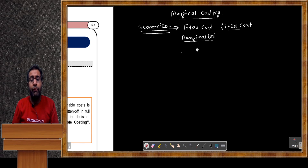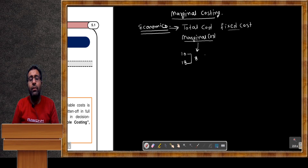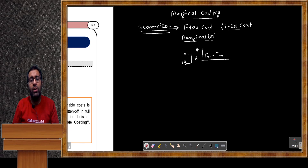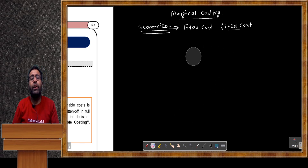In economics, the meaning of marginal cost is: if one unit costs 10 and the second unit costs 18, then the difference between these two — rupees 8 — is regarded as marginal cost. That is T(n) minus T(n-1). When we use one extra commodity, the additional cost is regarded as marginal cost. But in costing, it is a different term.